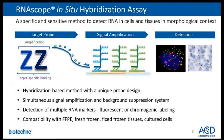RNA scope is a novel in-situ hybridization technology with a unique probe design that allows simultaneous signal amplification and background suppression, to achieve single molecule detection at a single cell level while preserving tissue morphology. RNA scope assay works virtually for any genome, any gene, and in any tissue. It allows either fluorescent or chromogenic labeling and is compatible with a variety of sample types including FFPE, fresh frozen, fixed frozen, as well as cultured cells. In today's webinar, we'll be focusing on fluorescent assays.